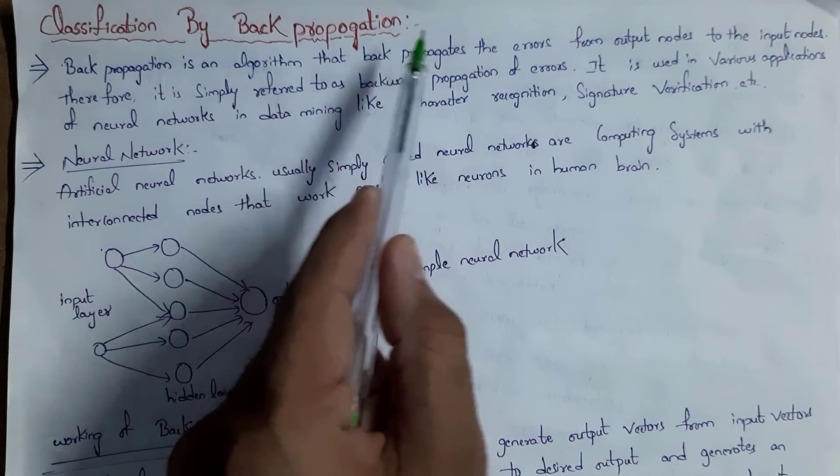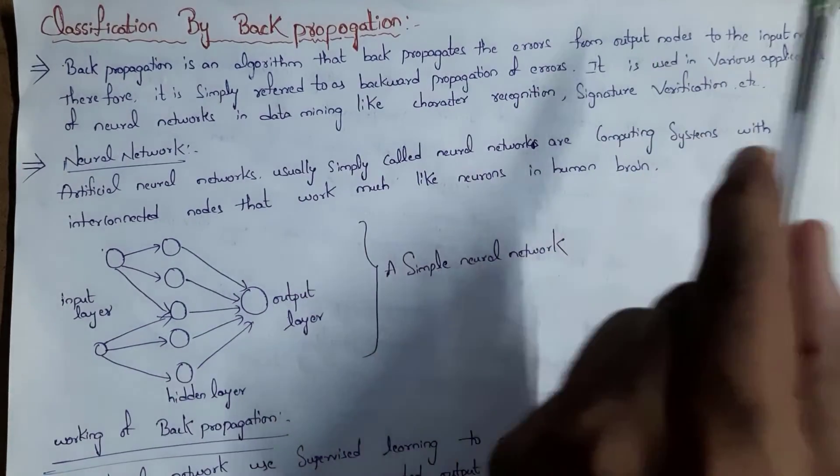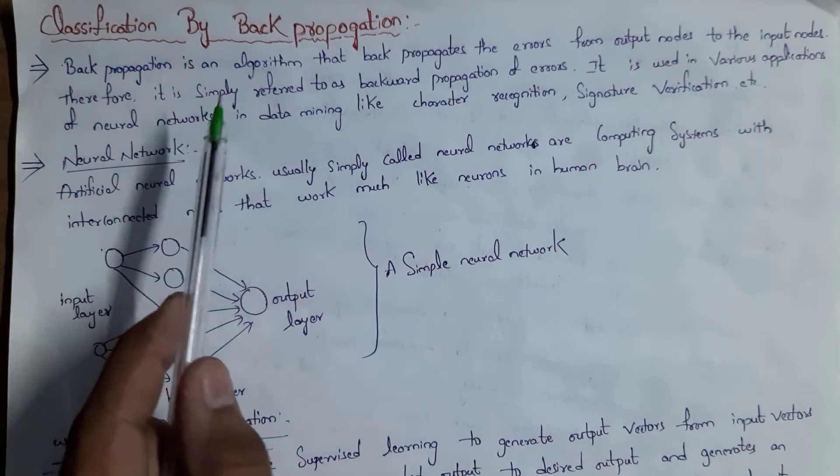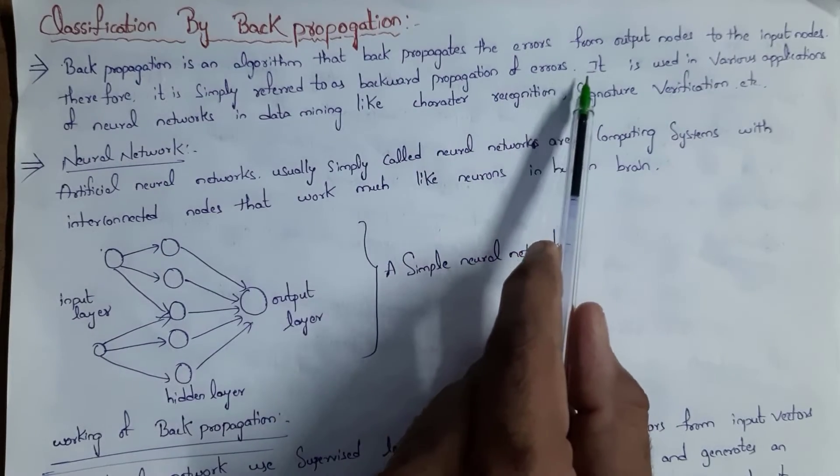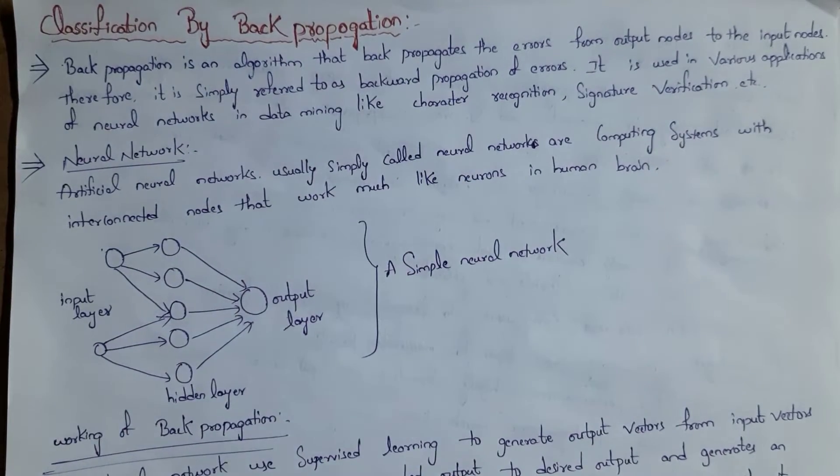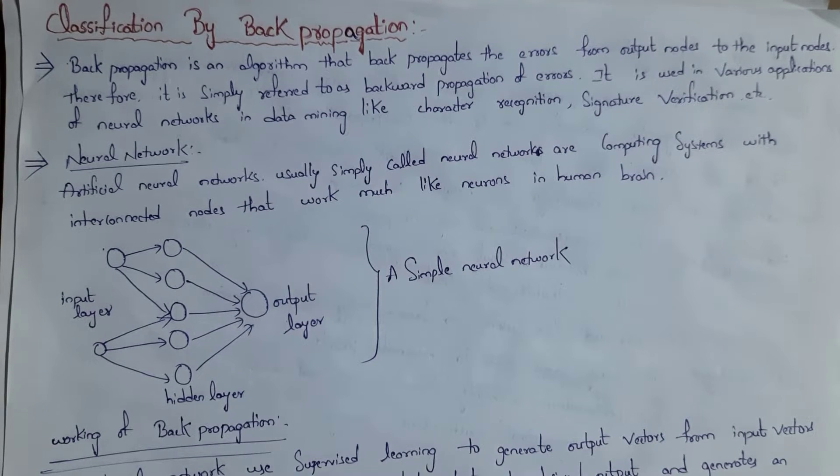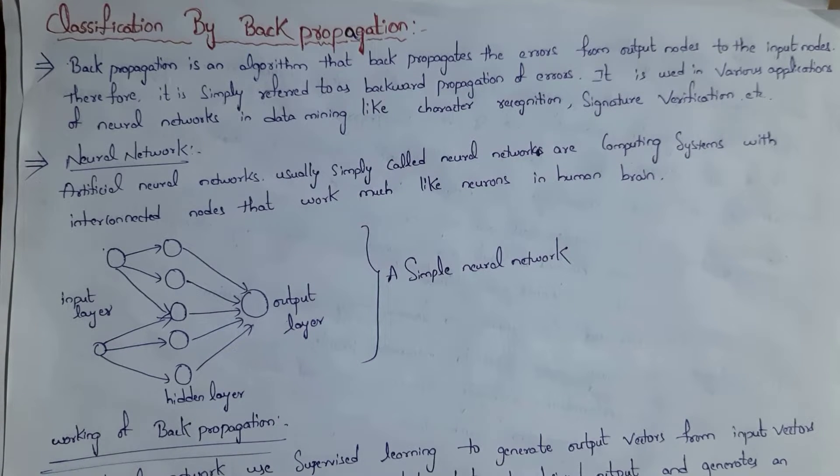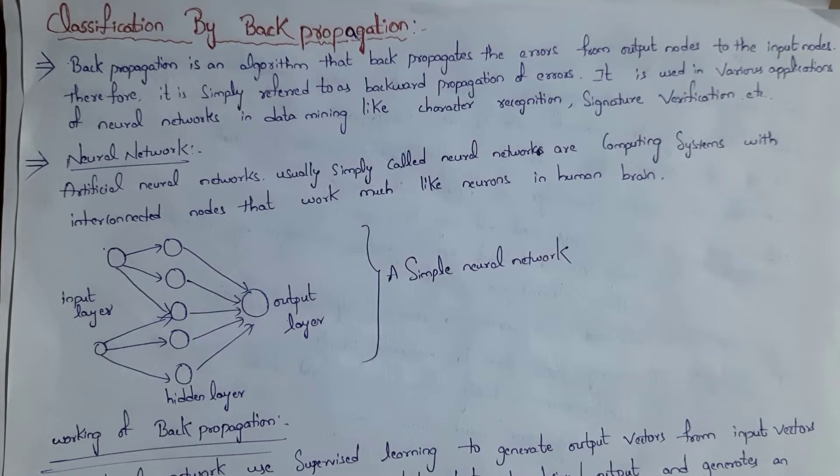Backpropagation is an algorithm that backpropagates the errors from output node to input node. Therefore, it is simply referred to as backpropagation of errors. By using input, we generate output. But if we get any errors in the output, we will send back these errors to the input. So we call this backpropagation of errors.